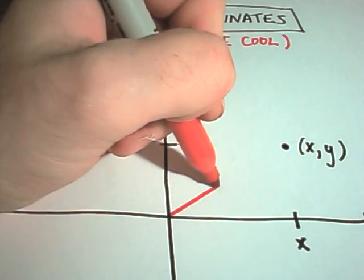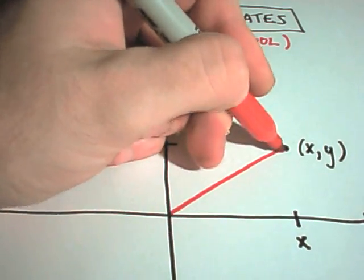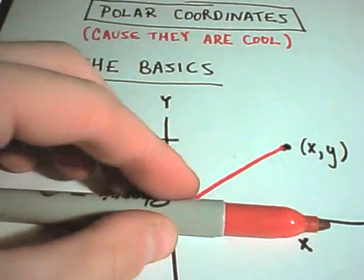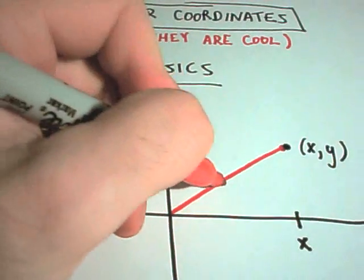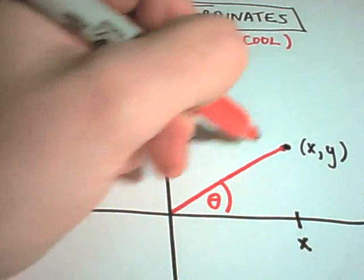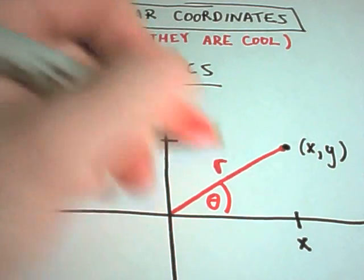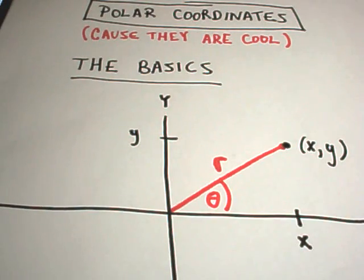So, and then a distance out to that point. So the angle I have to go, we call that theta, and the distance we have to go out, we call that r. So you can kind of think about that as being the radius.